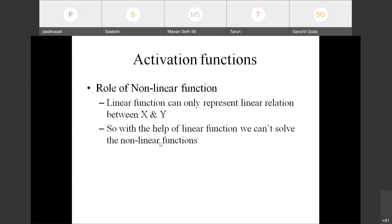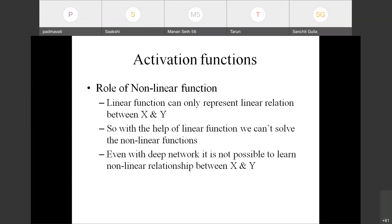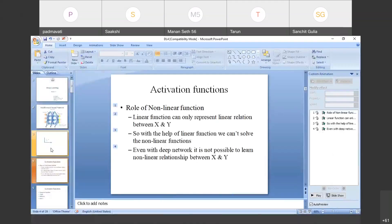Even with a deep network, it is now possible to learn non-linear relationships between x and y because we may have n number of neurons in each hidden layer. But if we don't introduce non-linearity on top of the linear function, then even though we make the network very deep, we are still not able to represent the non-linear relationship between x and y.